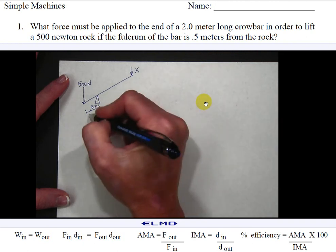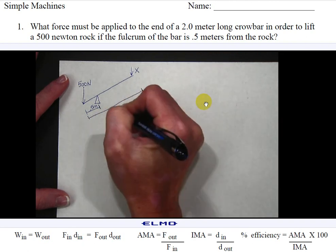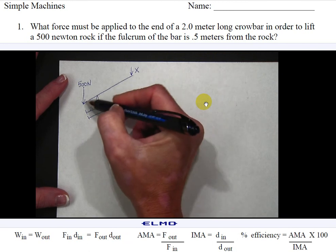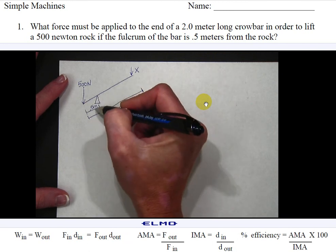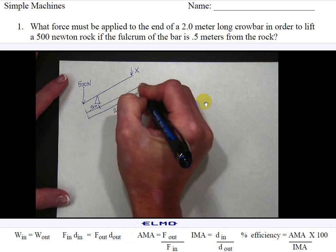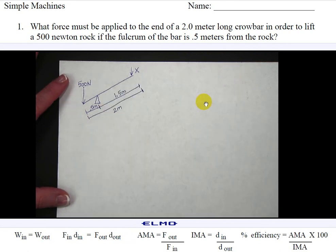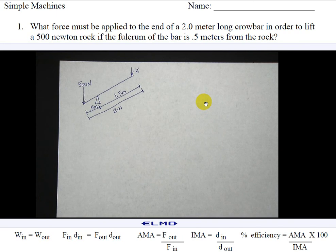If the whole length of the crowbar is 2 meters and the distance from the rock to the fulcrum is half a meter, then that leaves the distance from the fulcrum to the force being applied to be 1.5 meters. So now I have a picture to represent what's happening in the problem.